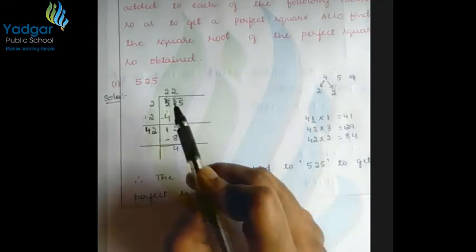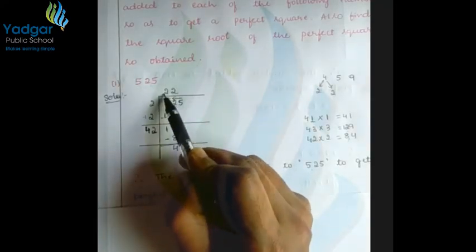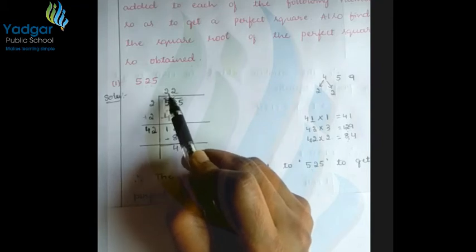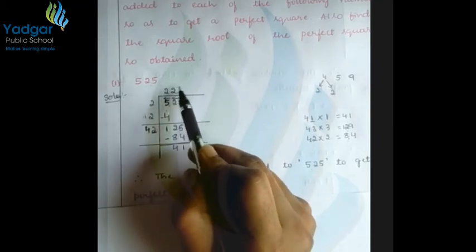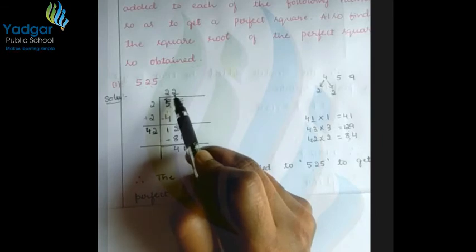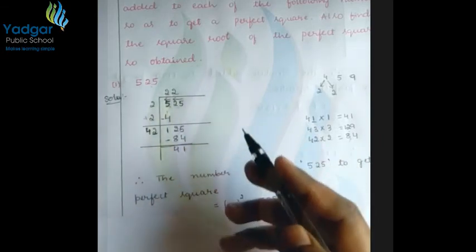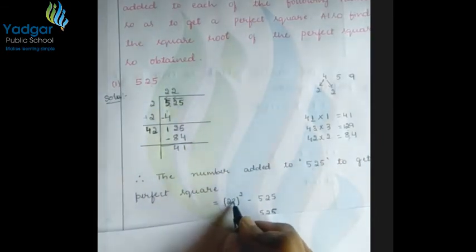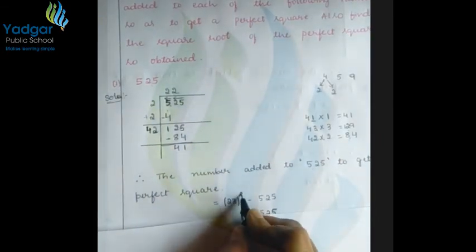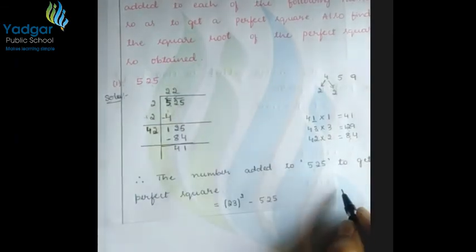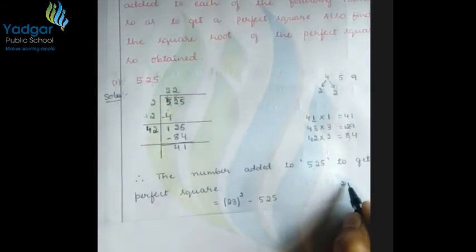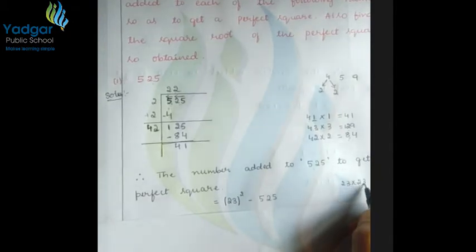You have to add 1 to the quotient. The quotient is 22, so 22+1=23. Now you have to square 23: compute 23² minus 525.